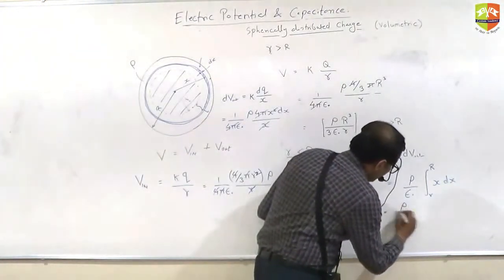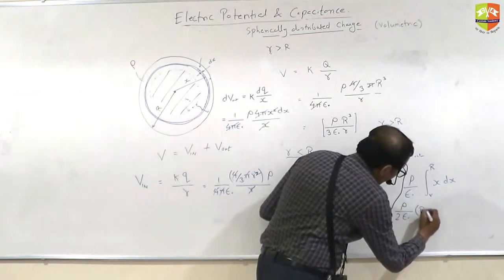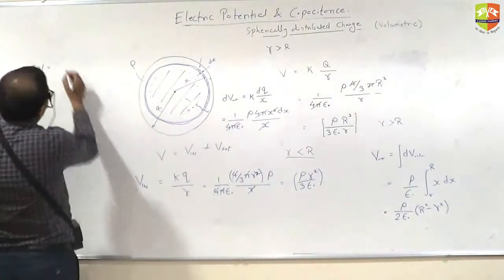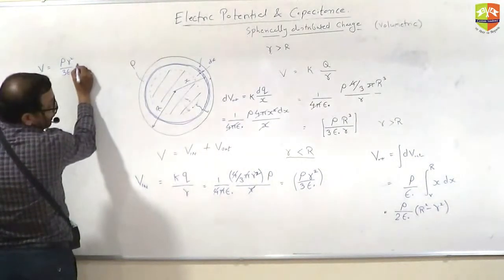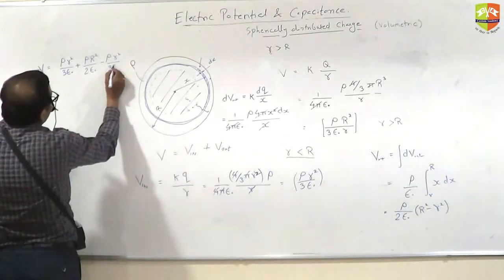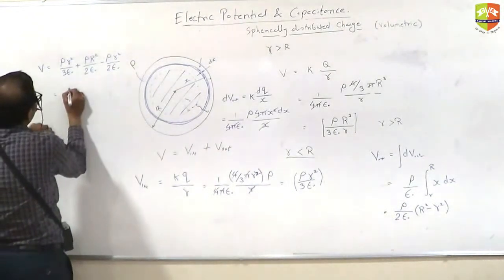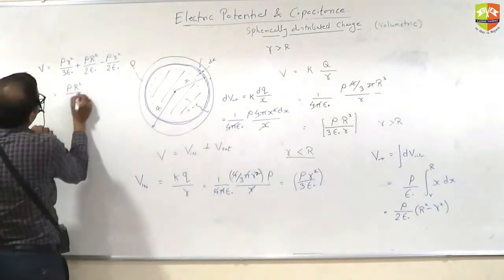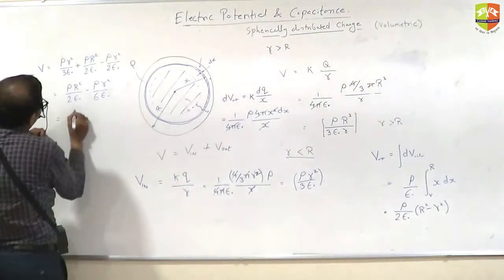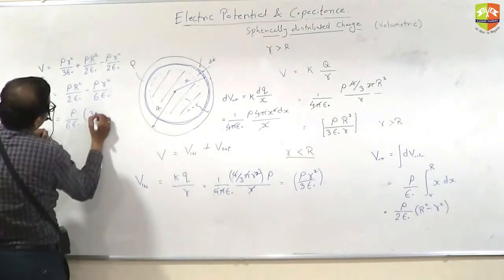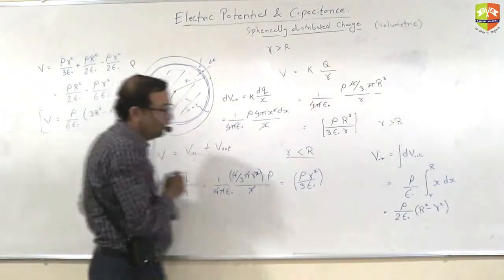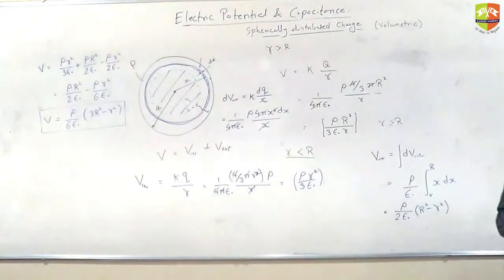So if you simplify this you get rho divided by 2 epsilon 0 capital R squared minus small r squared. So total potential will be equal to rho r squared by 3 epsilon 0 plus rho capital R squared by 2 epsilon 0 minus rho small r squared by 2 epsilon 0. This will be equal to rho r squared by 2 epsilon 0 minus rho small r squared by 6 epsilon 0. So if I take rho by 6 epsilon 0 common, I will get 3 capital R squared minus small r squared. This is the potential inside the volume charge distribution in a sphere.